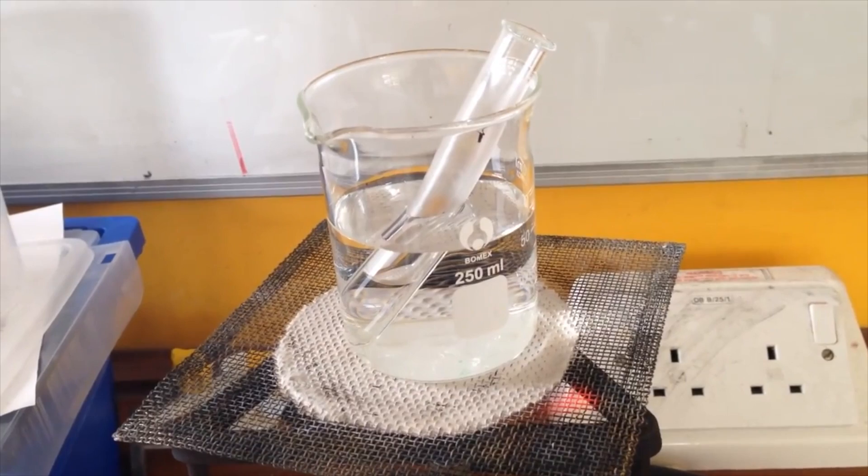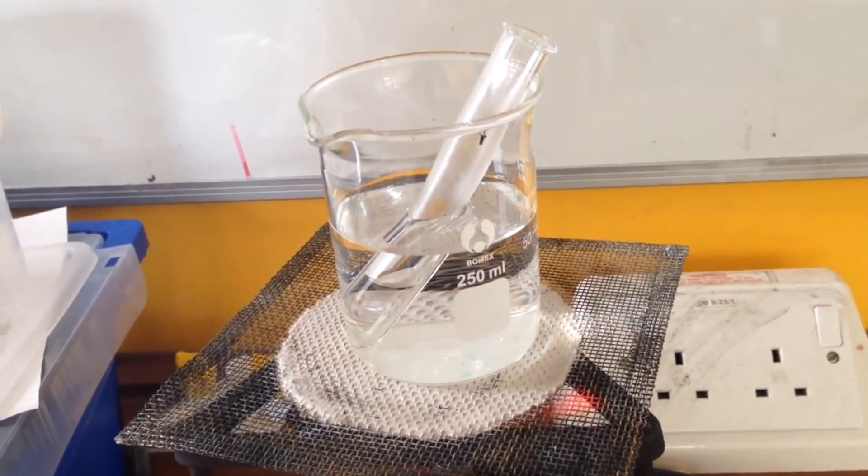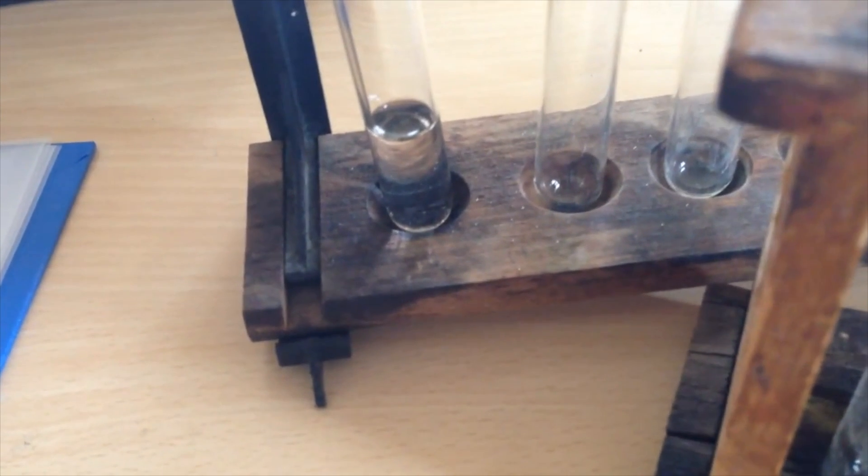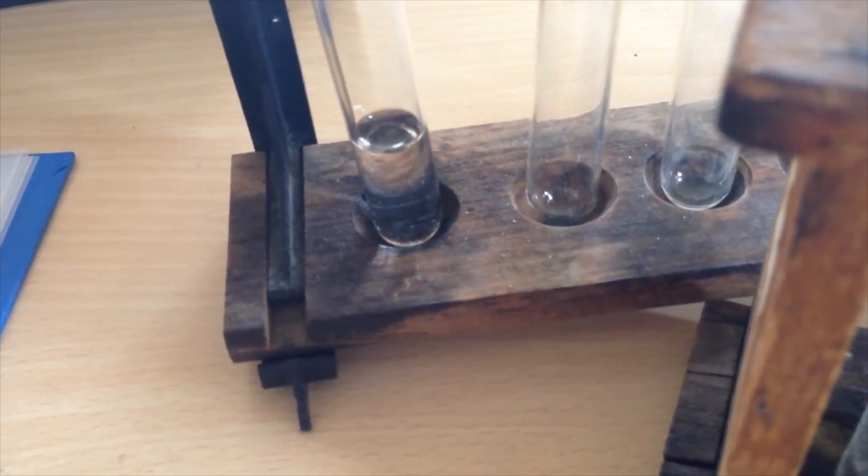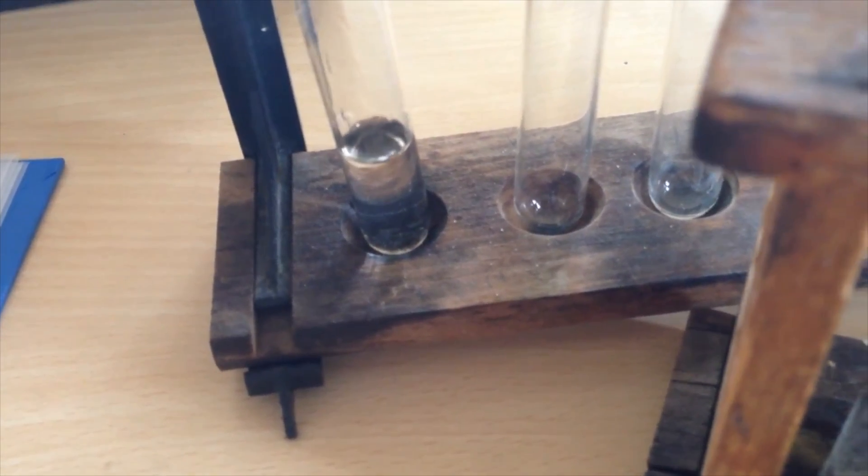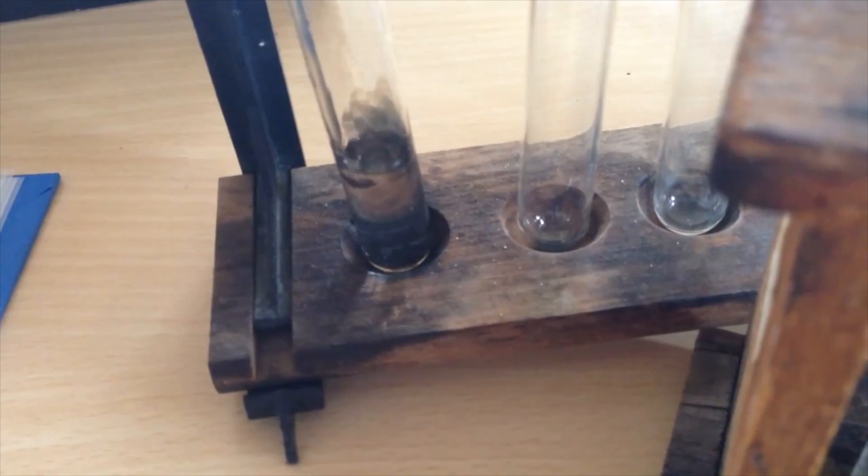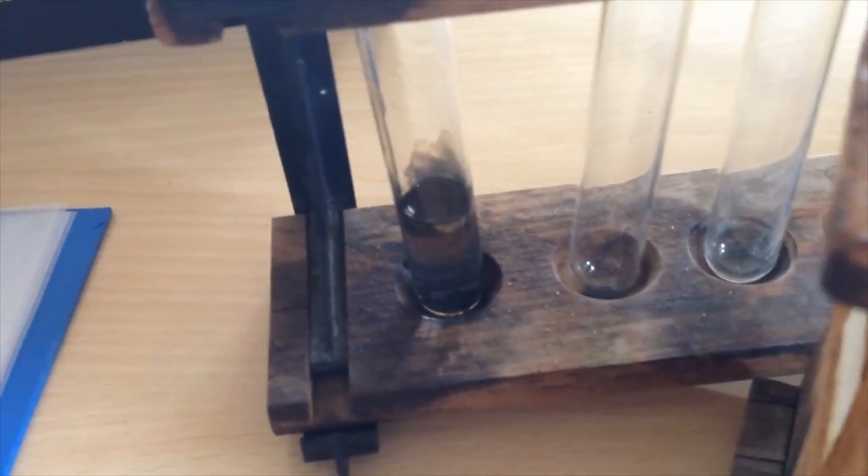We're just going to warm the solution gently for a couple of minutes. So now I have the ethanal that I've produced. I'm just going to slowly add 10 drops. 1, 2, 3, 4, 5, 6, 7, 8, 9, 10 to my solution and we'll see what happens.